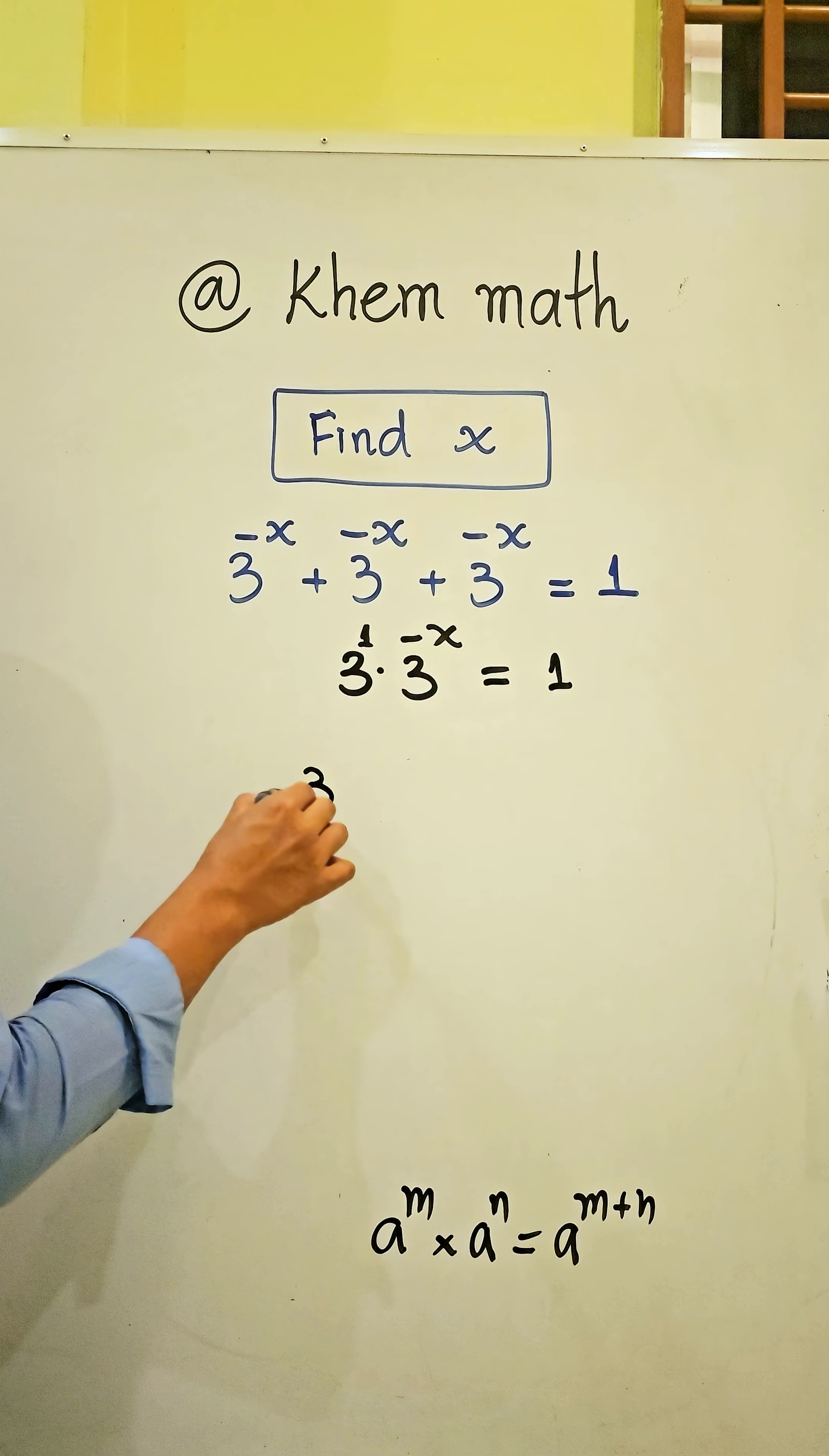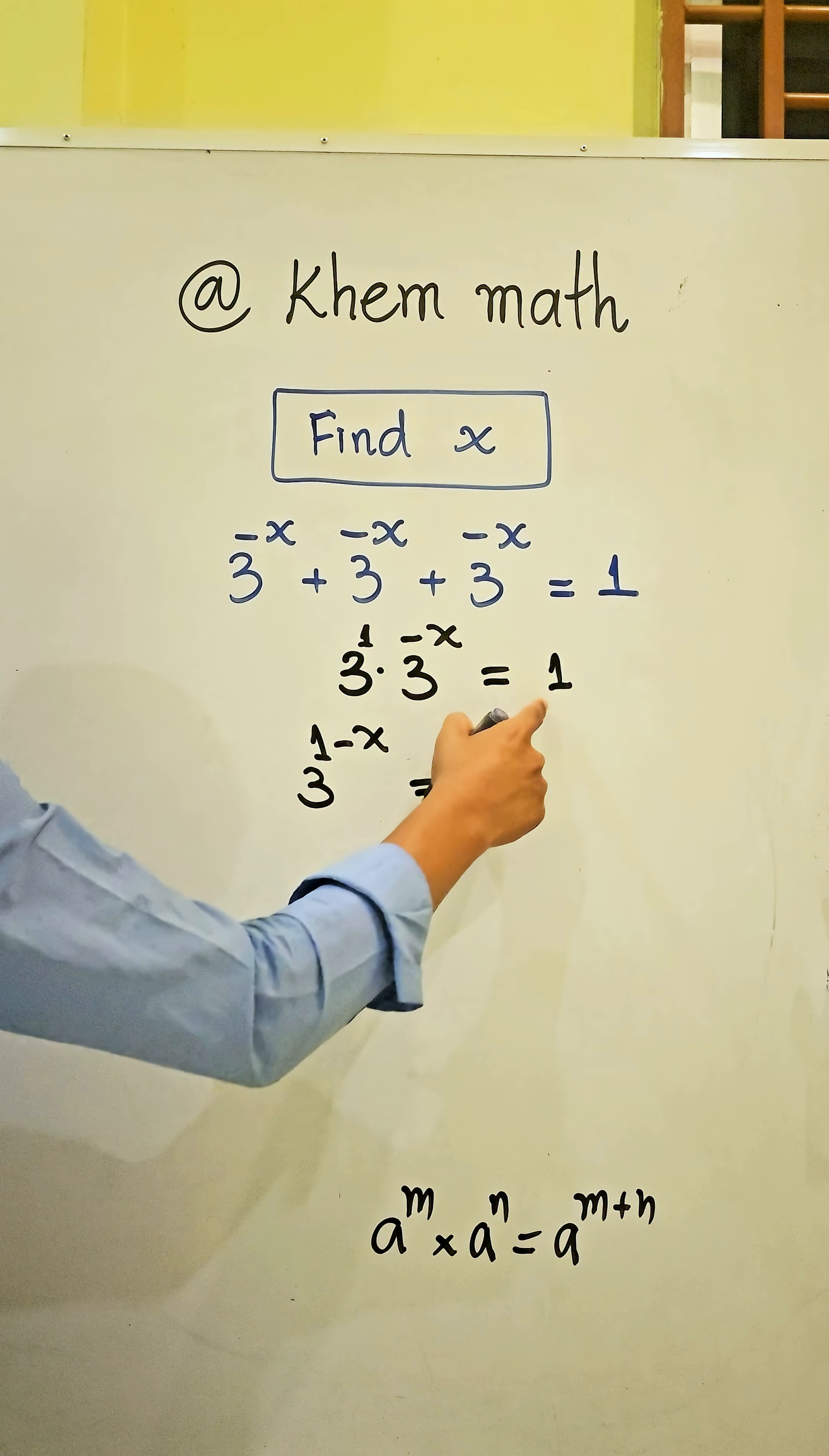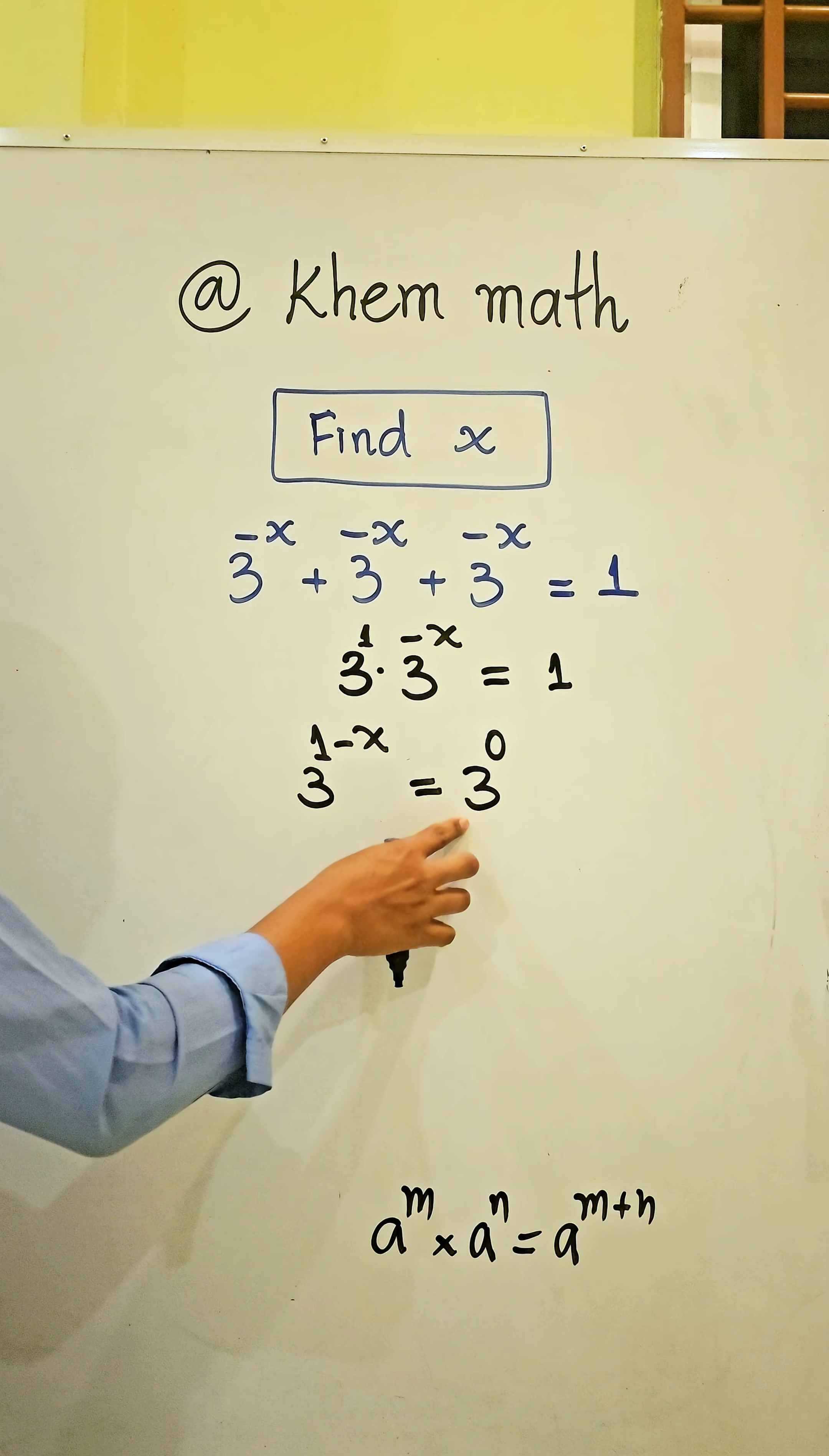Here we get 3 power 1 minus x equals 1. I can write 1 as 3 power 0. We know any number to the power 0 equals 1. So here, the bases are the same, so the exponents must be equal. We get 1 minus x equals 0.